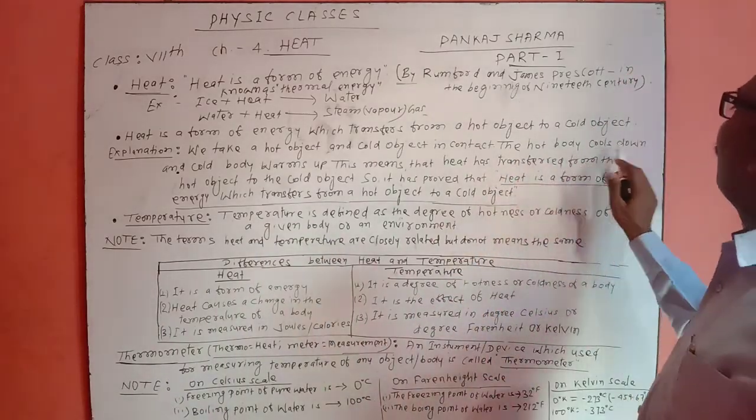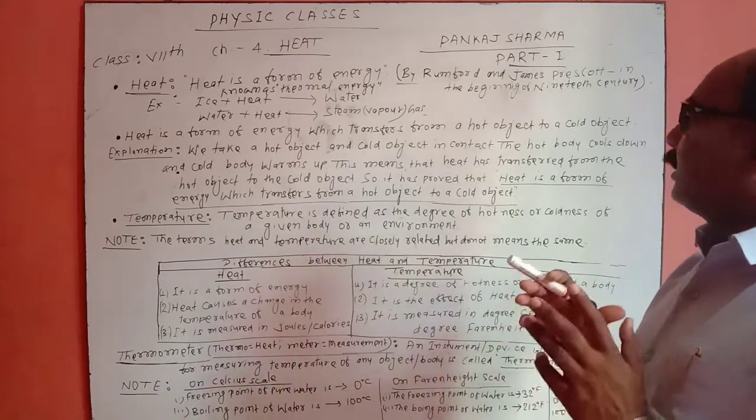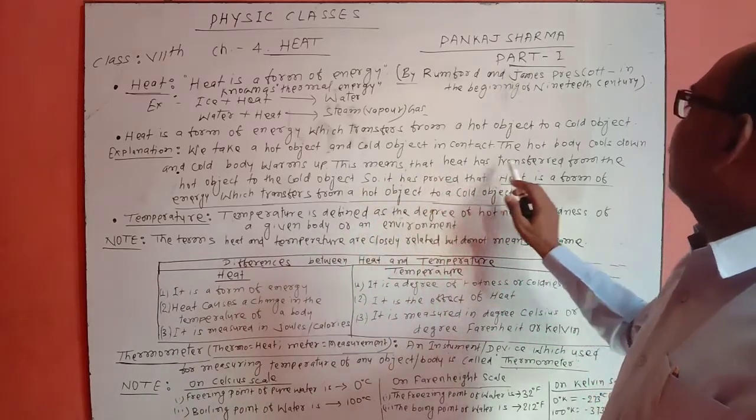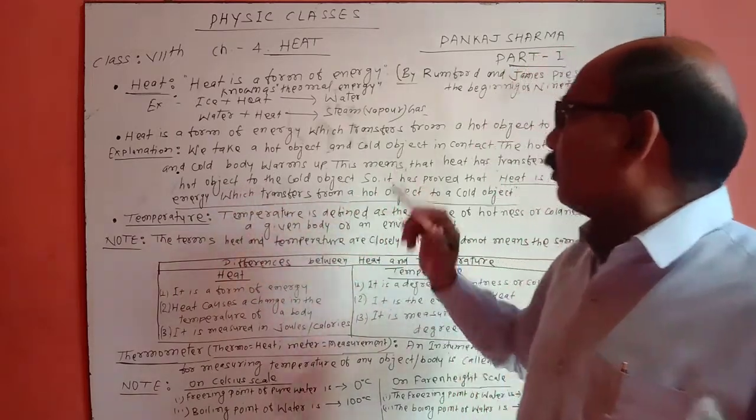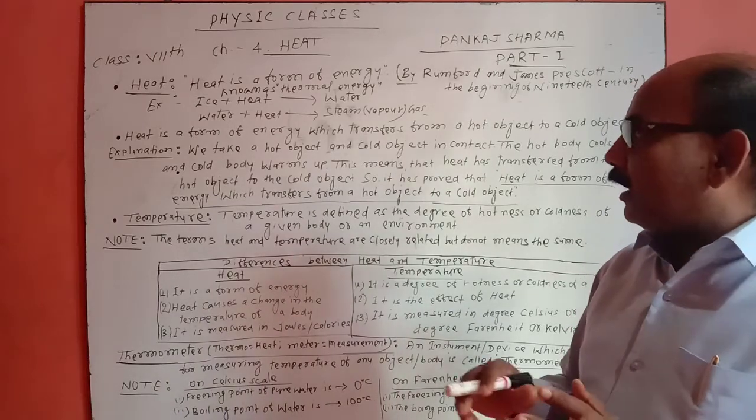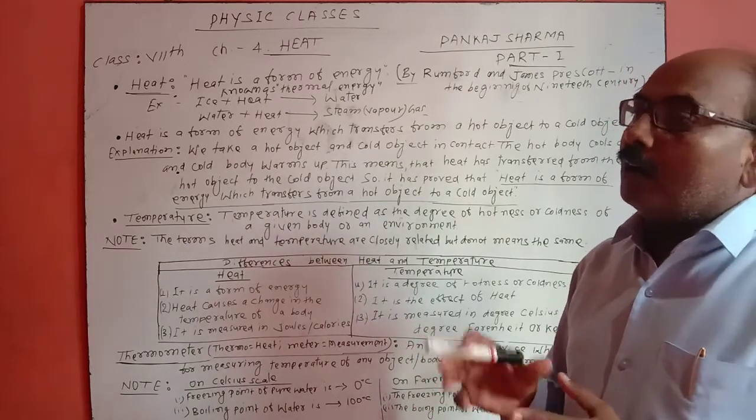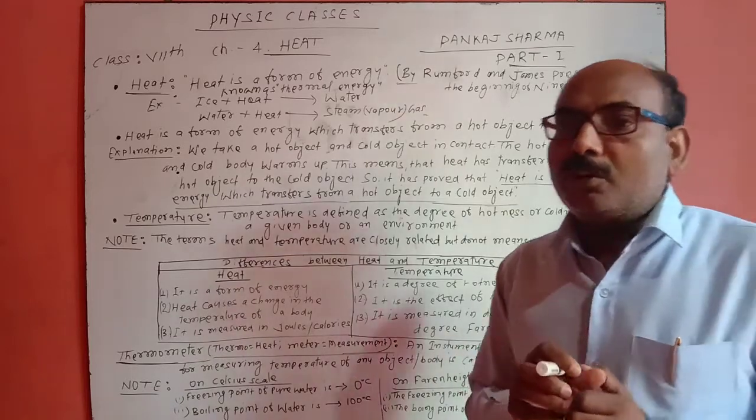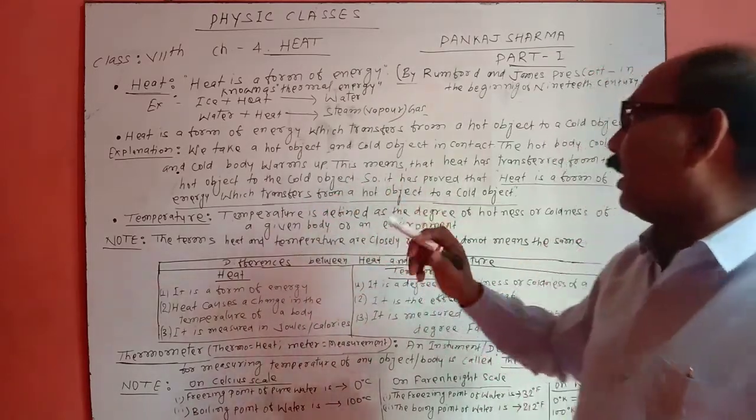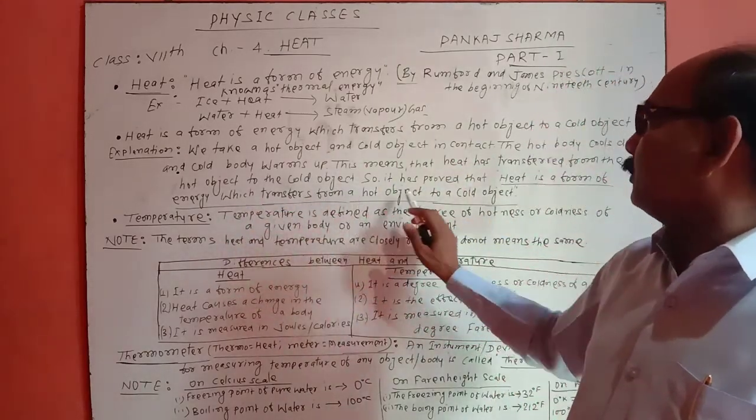The hot body cools down and the cold body warms up. Heat is transferred from the hot object which cools, to the cold object which absorbs and gains heat. This proves that heat is a form of energy transferred from hot to cold objects.